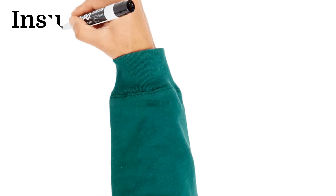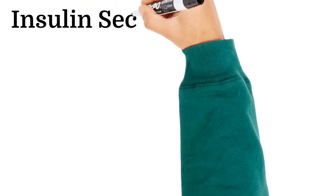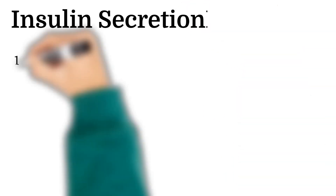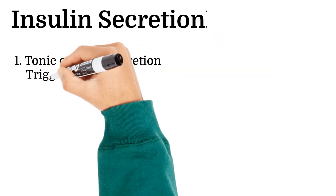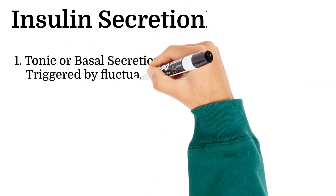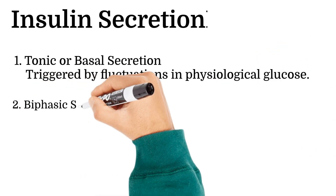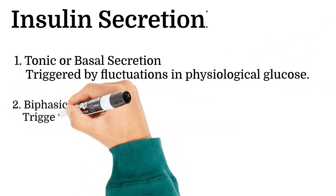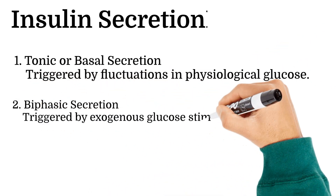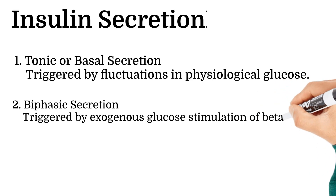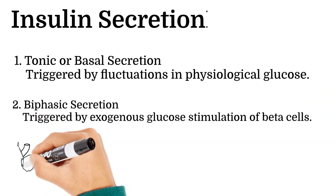Insulin secretion is thought to follow two mechanisms: tonic or basal secretion, which is modulated by fluctuations in physiological levels of glucose in the fasting state, and biphasic secretion, which is primarily in response to exogenous glucose stimulation of the beta cells.